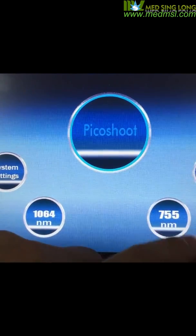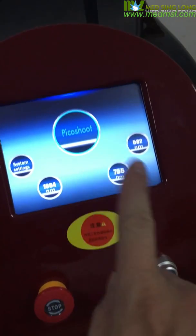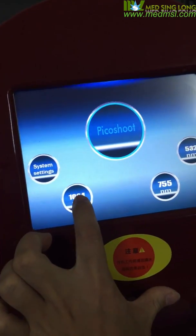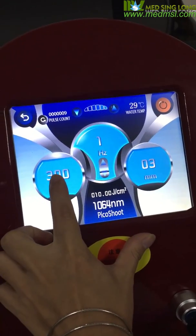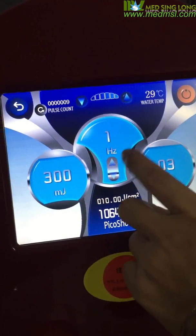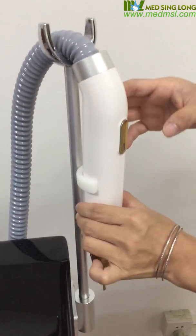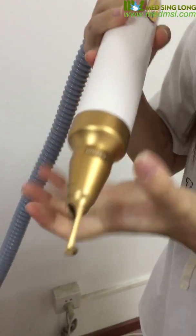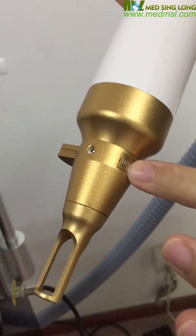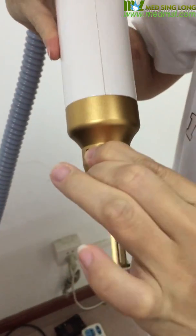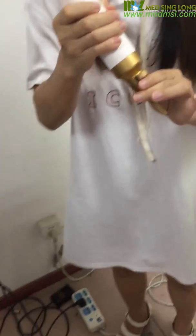The 1064 wavelength is for deep colors like black and dark blue pigmented tattoos. The 532 is for colored tattoos like yellow and red. The 755 is mainly for skin rejuvenation. For picosecond treatment, energy can be set from 200 to 300, frequency is 1, then press work and start treatment. This handpiece can be switched between 1064 and 532 modes for treatment.